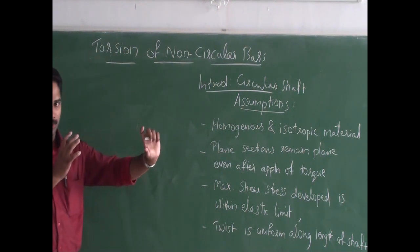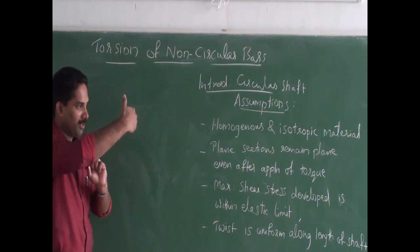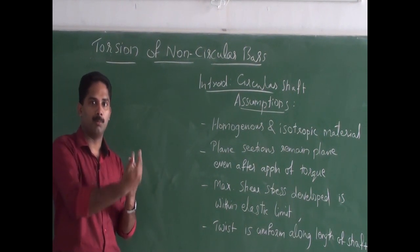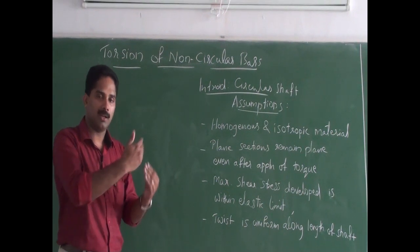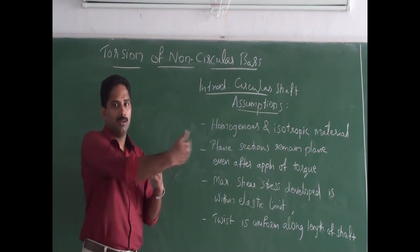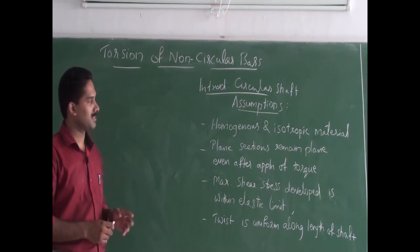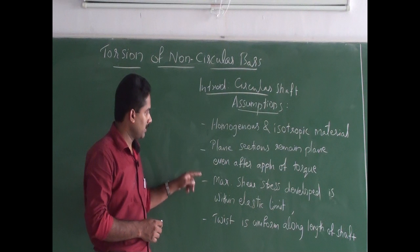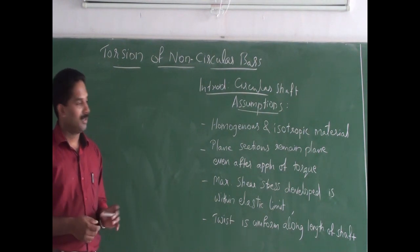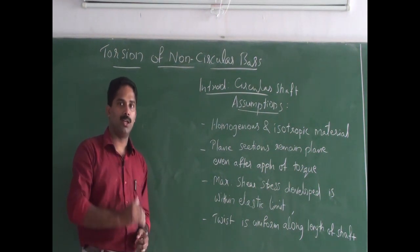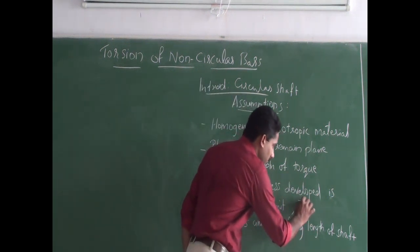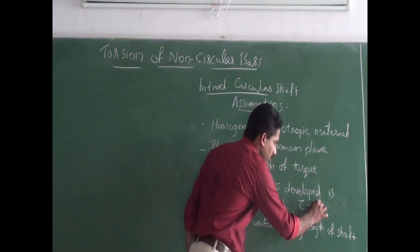For a circular shaft, there is no bulging or expansion of cross-sections — that is a special case of the circular shaft. The third assumption is that the maximum shear stress developed is within the elastic limit of the shaft, meaning shear stress will be proportional to shear strain as per Hooke's Law.